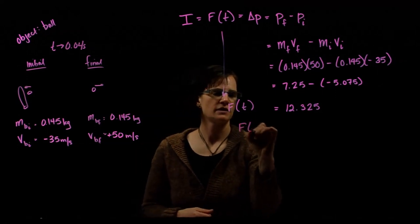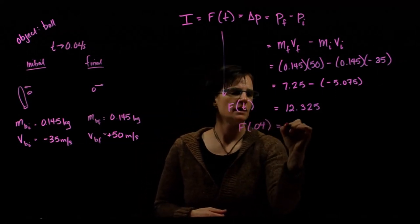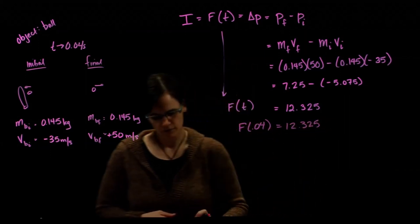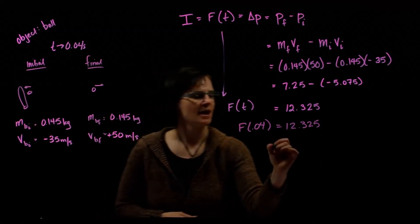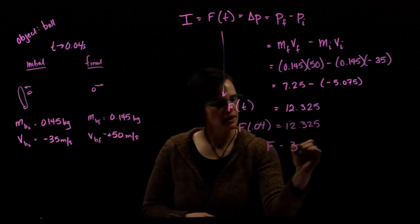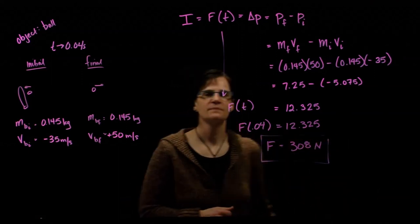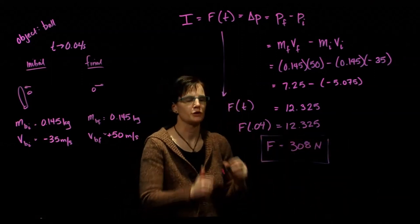So we have our force times 0.04 equals 12.325. Dividing both sides by 0.04, and we get a force of 308 newtons. So pretty strong force for our little baseball player.